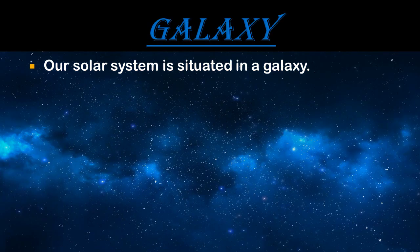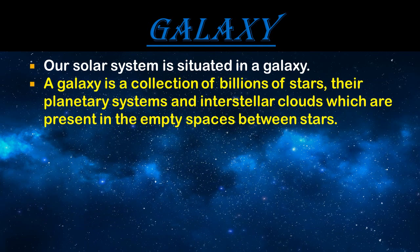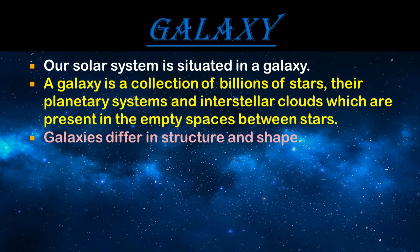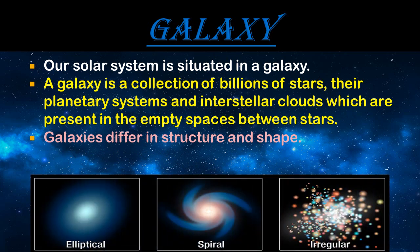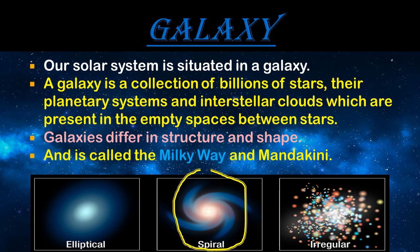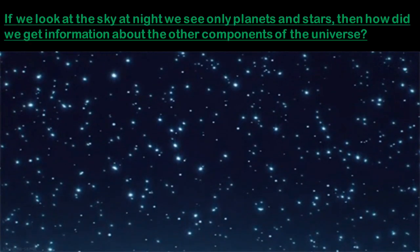Our solar system is situated in a galaxy. A galaxy is a collection of billions of stars and their planetary systems. Galaxies differ in structure and shape and can be divided into three types: elliptical, spiral, and irregular. Our galaxy is spiral in shape and is called the Milky Way, also known as Mandakini.